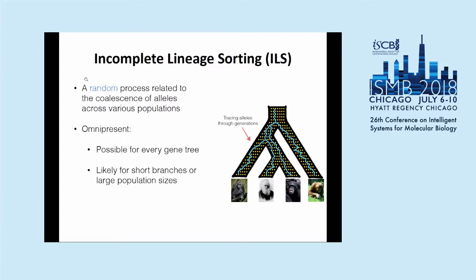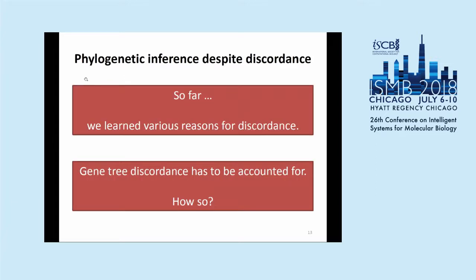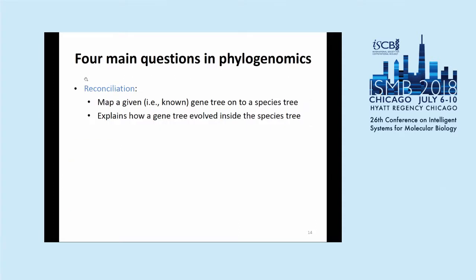So far we reviewed the various ways gene trees can be discordant from the species tree. We reviewed this so that now we can do something about it. We know gene tree discordances can happen, so we want to account for them. The question is, in what way? There are various computational problems that through the years people have developed for taking into account gene tree and species tree discordance.